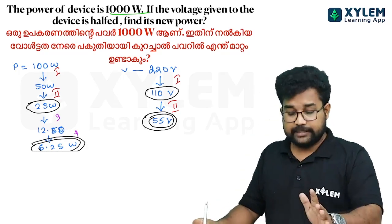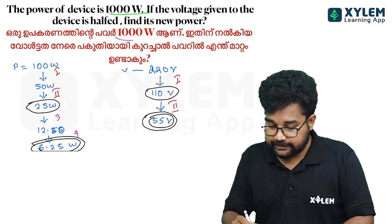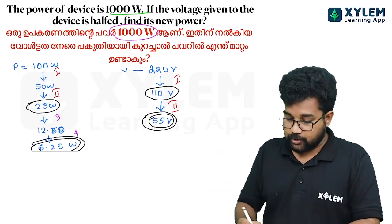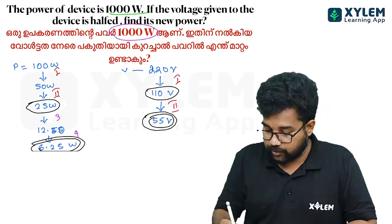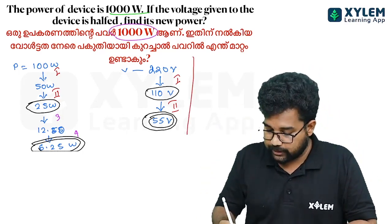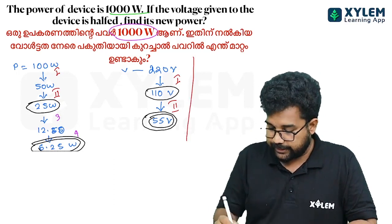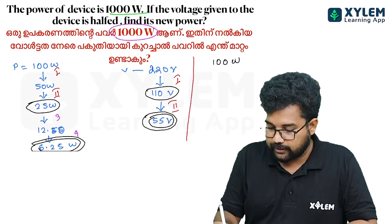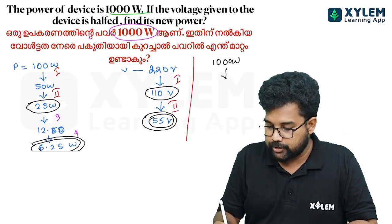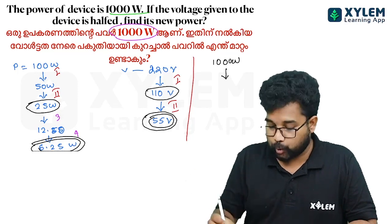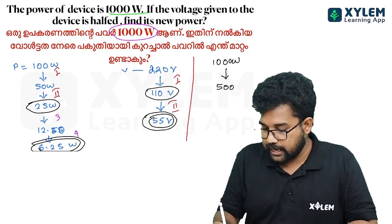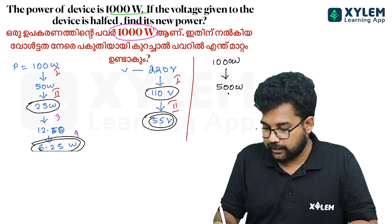Since the voltage is halved, which means a factor of 0.5, and the original power is 1000 watts, the new power is 1000 divided by 4, which equals 250 watts.